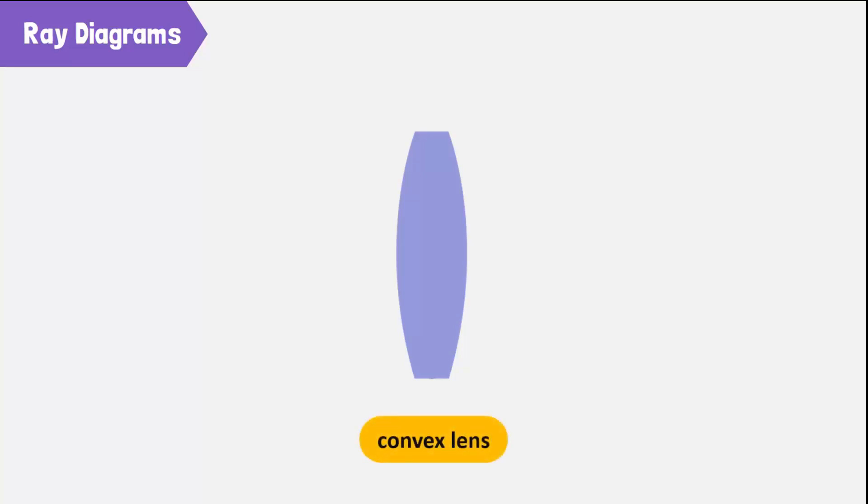Let's use a convex lens to illustrate. The center of the lens is known as the optical center. It is denoted by O.